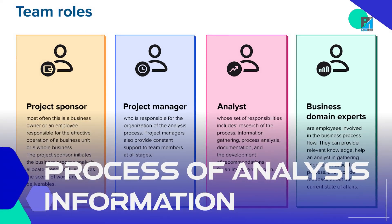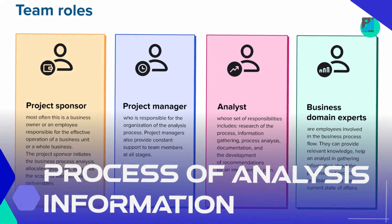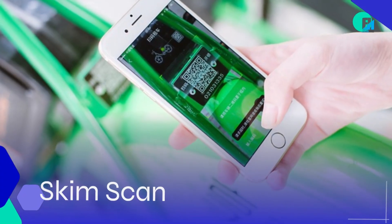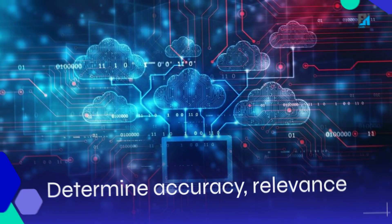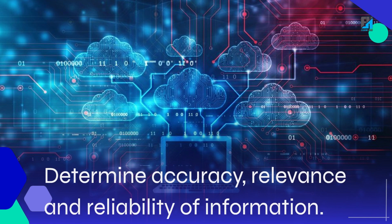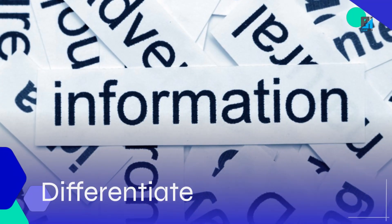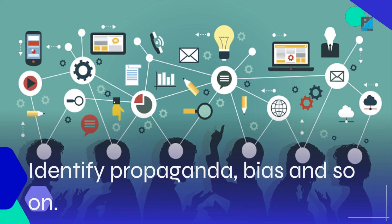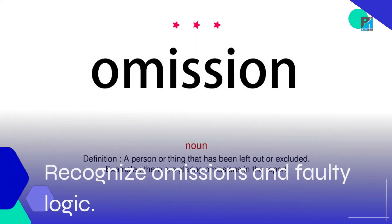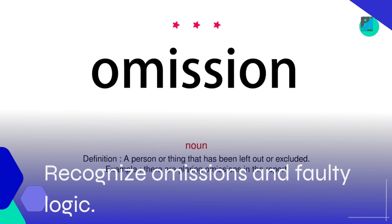Process of analysis of information: Skim scan. Determine accuracy, relevance, and reliability of information. Differentiate. Identify propaganda, bias, and so on. Recognize omissions in faulty logic.